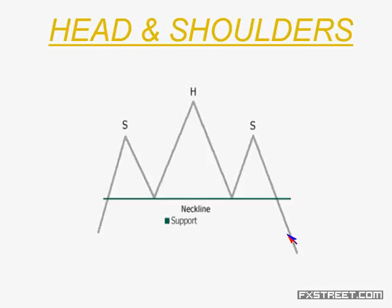Probably the most common of all the patterns is the head and shoulders pattern. We have the left shoulder, the head, the right shoulder, and here's the neckline — the support. The way the pattern works is once we break down, you have a strong bias to the downside. Just reverse it for an inverted head and shoulders.